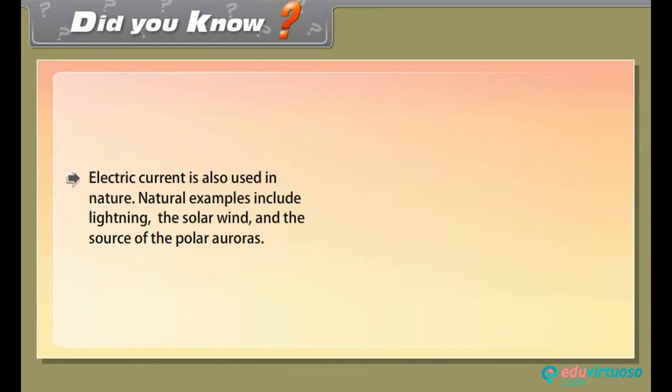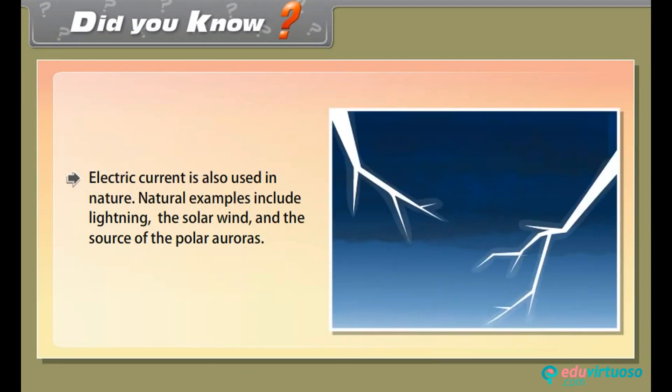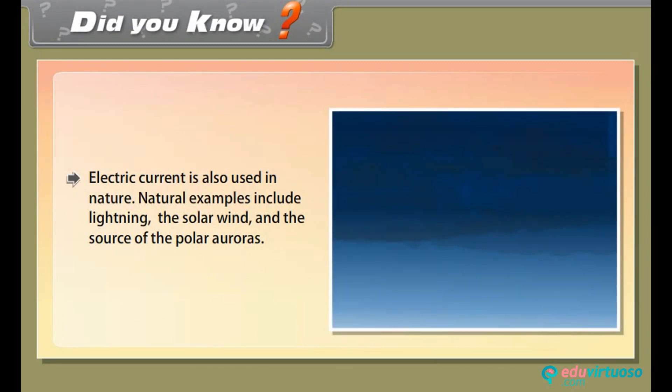Did you know? Electric current is also used in nature. Natural examples include lightning, the solar wind, and the sources of the polar auroras.